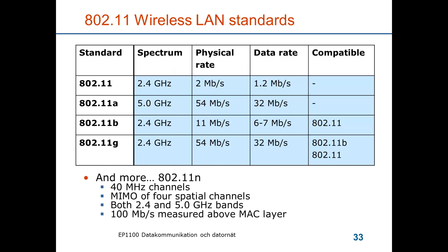The original 802.11 standard without a letter suffix only reached up to 2 Mbps. The most recent standard, 802.11n, has wider frequency channels, uses multiple input multiple output antennas allowing four spatial channels simultaneously within the same frequency bands, operates at both 2.4 GHz and 5 GHz, and targets 100 Mbps measured above the MAC layer — though the 2.4 GHz band is heavily used and suffers interference from microwave ovens.